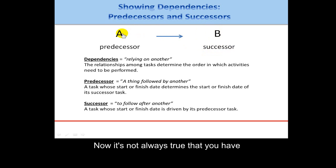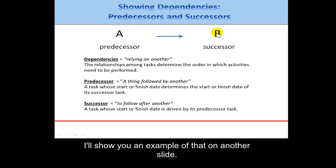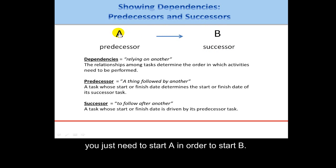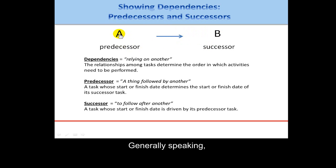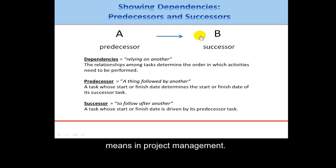Now it's not always true that you have to completely finish A before doing B, and I'll show you an example of that on another slide. Or it may be that for some tasks you just need to start A in order to start B. So dependency relationships — the predecessor and successor relationships — have a few dimensions, but generally speaking, this is what dependency means in project management.